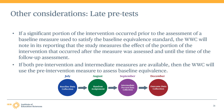Late pre-tests are another important consideration when applying the baseline equivalence standard. If a significant portion of the intervention occurred prior to the assessment of a baseline measure used to satisfy the baseline equivalence standard, the WWC will still allow that measure to be used, however reviewers should note this in their review. If a study provides a true pre-intervention measure as well as one of these late or intermediate pre-test measures, then the WWC will always prefer to use the true pre-intervention measure to assess baseline equivalence.